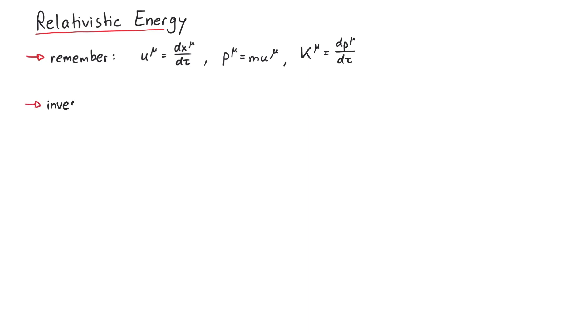Let us now start by investigating the inner product of k mu and u mu. On the one hand, by using the definition of 4-velocity, this yields gamma times c k0 minus the inner product of k and v. Since the spatial components of k mu are equal to gamma times the 3-force f, we can write this as gamma times the inner product of f with v.